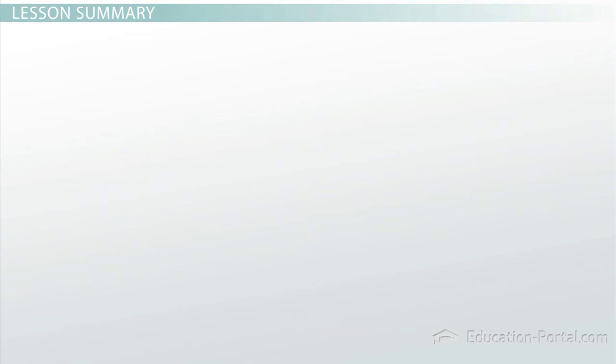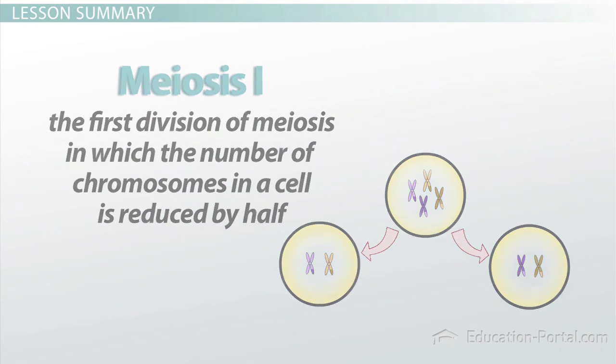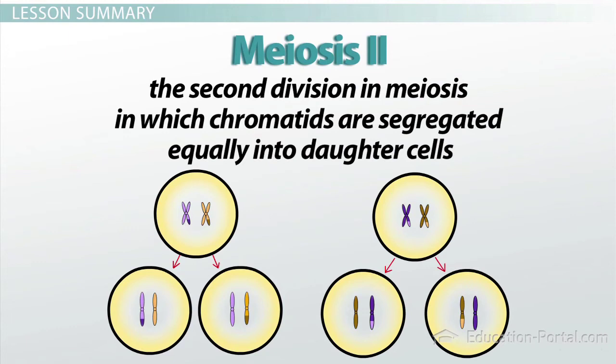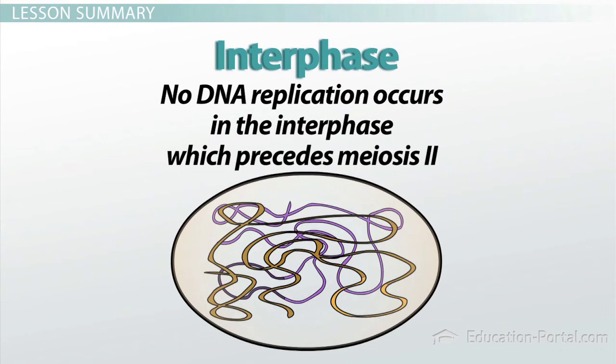In summary, meiosis I is the first division of meiosis in which the number of chromosomes in the cell is reduced by half. Meiosis II is the second division in meiosis in which chromatids of each chromosome are segregated equally into daughter cells. No DNA replication occurs during the interphase which precedes meiosis II.